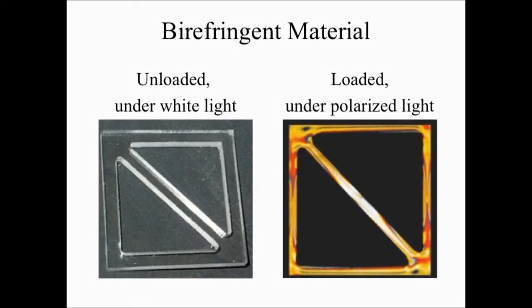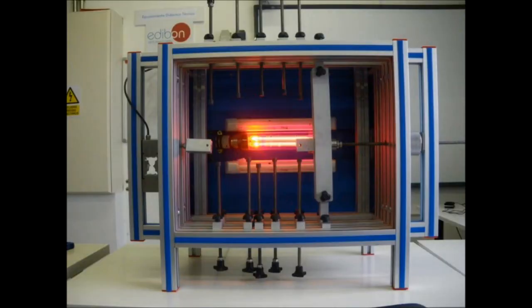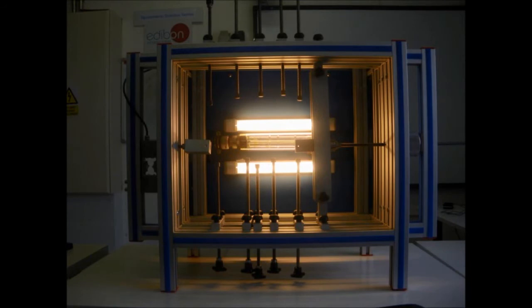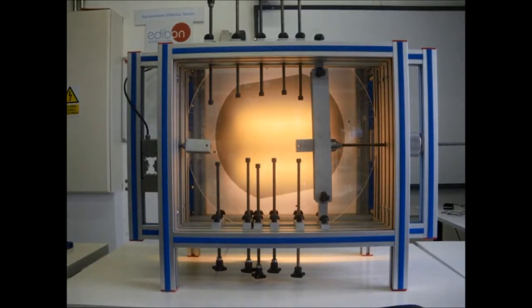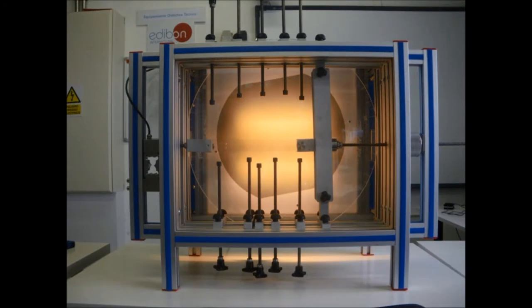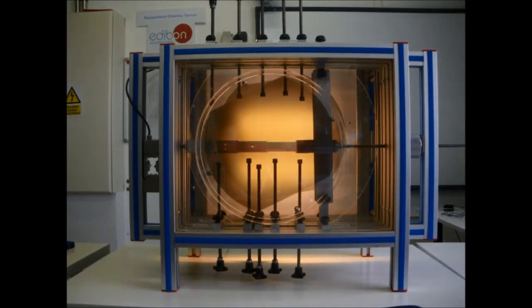Both units teach concepts of photoelasticity, which is a non-destructive visual method of analyzing and recording mechanical stress in physical components. This unit uses transparent test specimens that become birefringent when under mechanical stress. Monochromatic or white light is diffused and then polarized by an optical filter. It passes through the loaded specimen where the light undergoes double refraction.